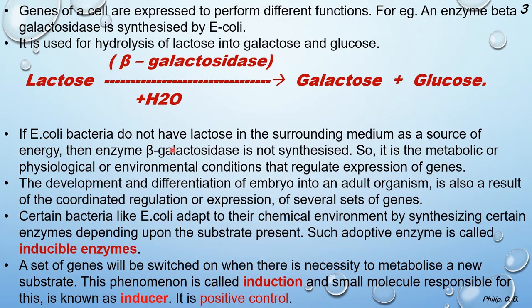If E. coli bacteria do not have lactose in the surrounding medium as a source of energy, then the enzyme beta-galactosidase is not synthesized. It is metabolic, physiological, or environmental conditions that regulate expression of the gene. Without the enzyme, hydrolysis of lactose into galactose and glucose will also not take place.